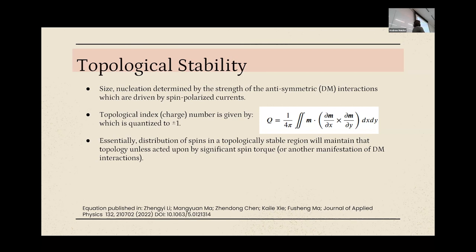The math is pretty complicated, but it boils down to a fairly simple equation — basically taking a cross product of the two in-plane components of magnetization, integrated essentially across a circle. This has been normalized to what is called the topological index, or topological charge. Even though it has nothing to do with the actual inherent property of charge, it is quantized to either plus or minus one. The distribution of spins in this topologically stable region will maintain that topology until acted upon by a significant spin torque, such as from a spin-polarized spin current.